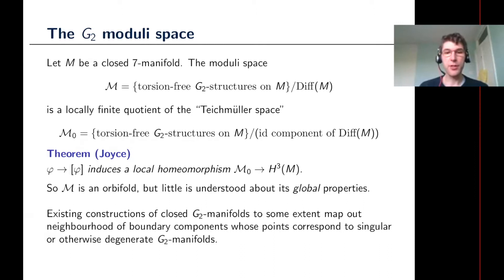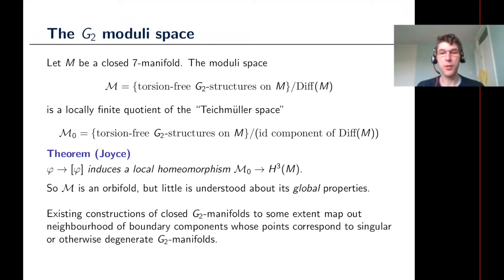An interesting question is: once you fix a closed seven-manifold, how many different G2 structures are there? You can look at the space of all torsion-free G2 structures and divide by the action of the diffeomorphism group. If you divide only by the identity component of the diffeomorphism group, you get a Teichmüller space, and the proper moduli space is a locally finite quotient of that. The identity component of diffeomorphisms preserves the de Rham cohomology class of the three-form, so you can map this Teichmüller space to the third de Rham cohomology, and that is in fact a local homeomorphism.